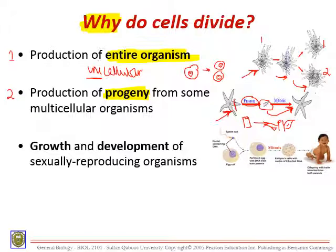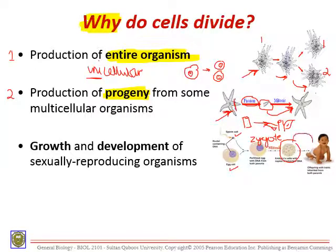The third point is growth and development of sexually reproducing organisms. A sperm cell and an egg cell fuse together to produce a zygote — just a single cell. Division from this zygote produces a ball of cells, and this ball of cells develops to produce a full organism by cell division. So from a zygote, we go from one cell to trillions of cells to produce a fully developed organism.